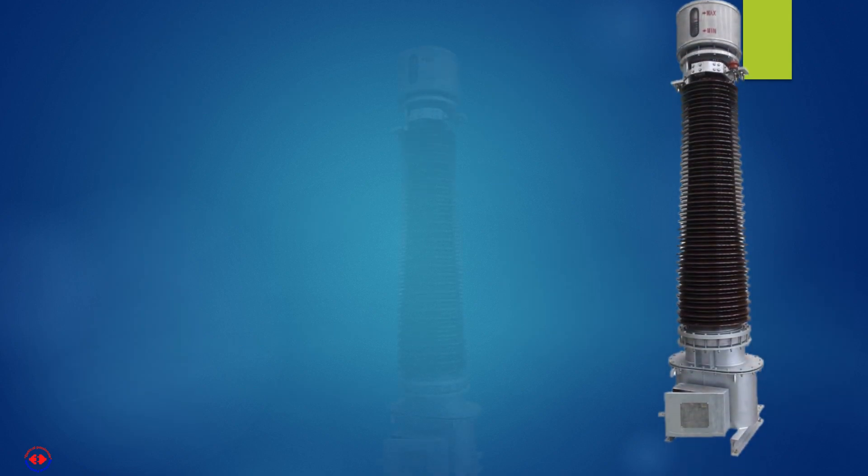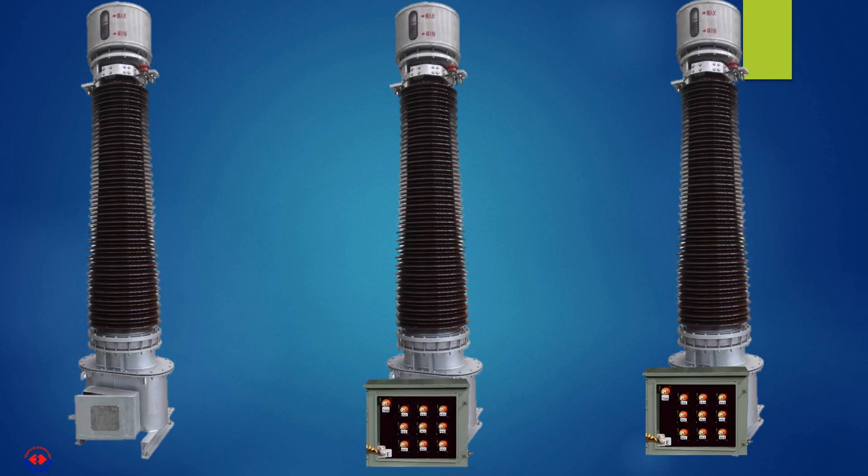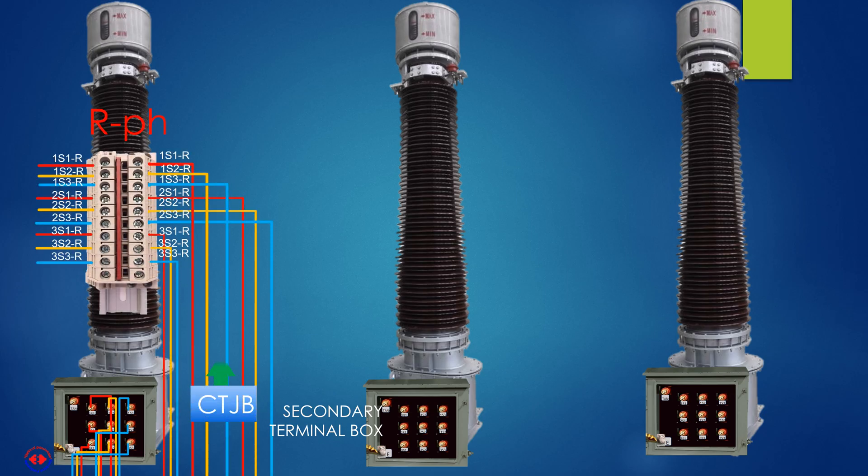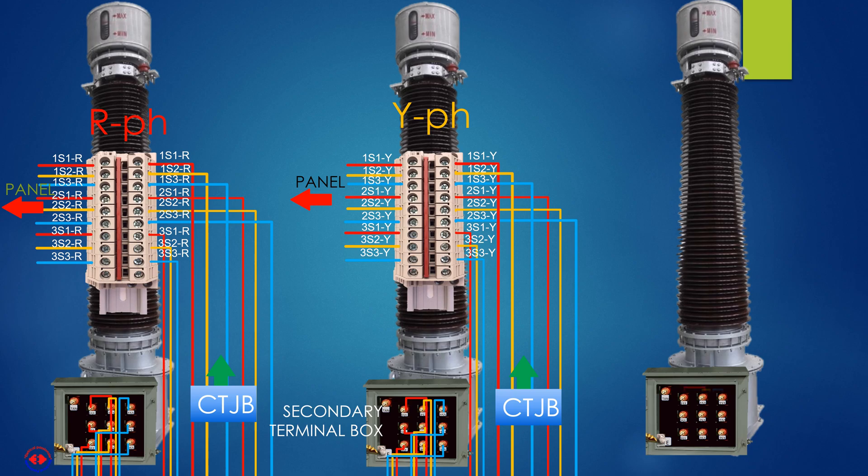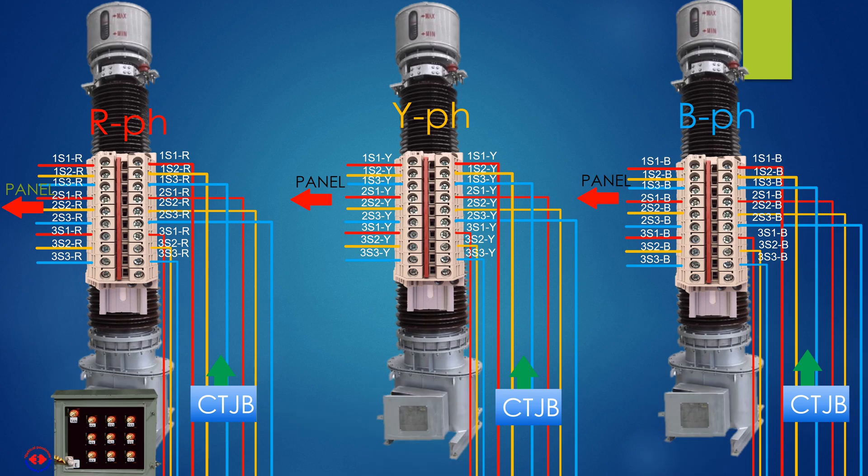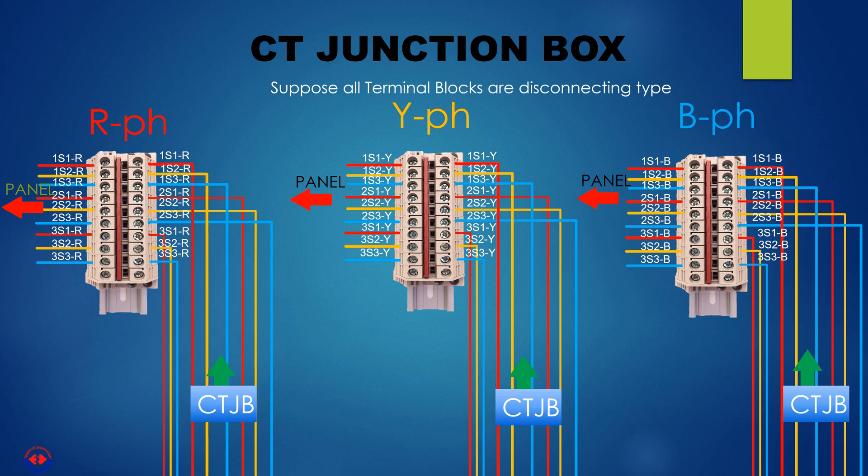The connections of secondary wires from terminal box to CTJB, CT current transformer junction box, are shown here. Suppose all terminal blocks are disconnecting type as it was not possible to collect images of such terminal block arrangement with disconnecting type.